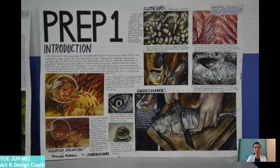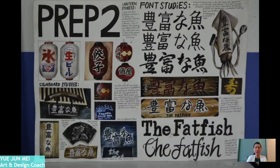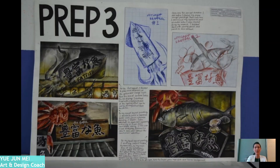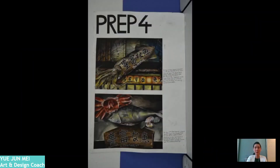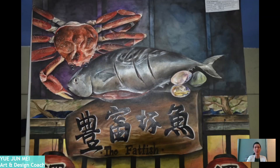Now let me show you some artworks produced by students so that you can understand this further. These are some of the works done by students in Malaysia, and they scored a grade between A to A star. It shows a deep understanding of the topic that they were doing, and they show various mediums and techniques which they have learned in class.